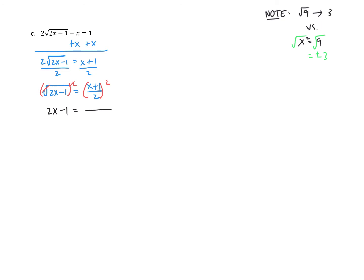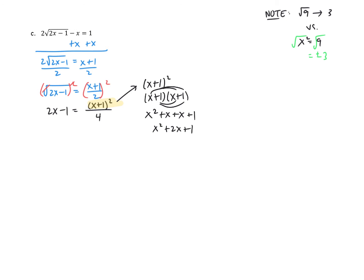Now that the radical is alone, I can square everything. On the left side, the square root and square undo each other, leaving 2x minus 1. On the right side we need to be careful — the numerator is (x plus 1) squared, and when we square the 2 we get 4 in the denominator. We cannot distribute the squared when there's addition in the parentheses. Instead, x plus 1 squared means x plus 1 times x plus 1, which using FOIL gives x squared plus x plus x plus 1, or x squared plus 2x plus 1. That goes back into our equation.